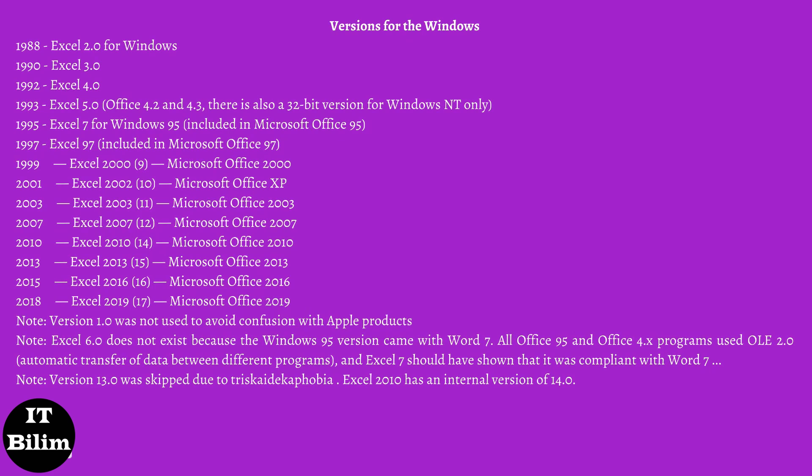Excel 95, also known as Excel 7, was released in the summer of 1995. Outwardly, this version resembled the previous one, with only a few new tools. However, this version was significant because Excel 95 was the first to use more modern 32-bit code. Excel 95 and Excel 5 used the same file format.